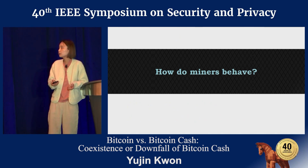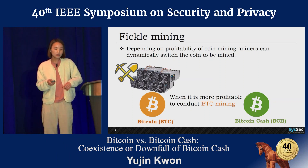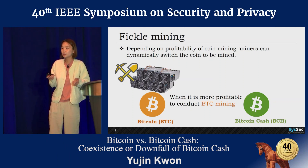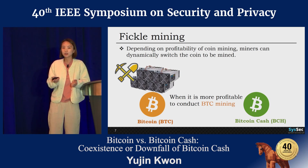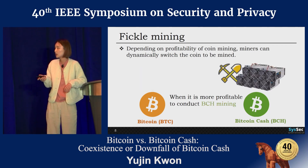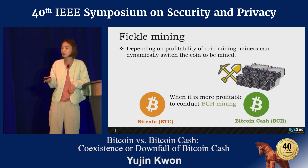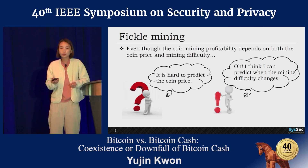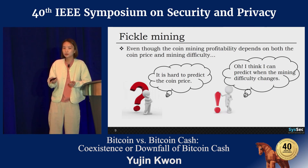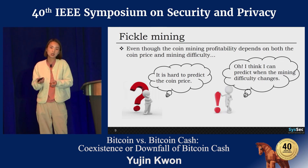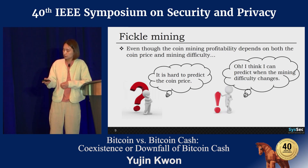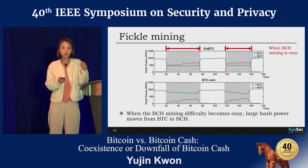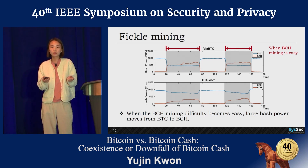In this situation, how do miners behave? Rational miners always pursue higher profit. Depending on the profitability of coin mining, miners can dynamically switch the coin to be mined. If it's more profitable to conduct BTC mining, they switch to BTC; otherwise, they switch to BCH mining. Even though coin mining profitability depends on both coin price and mining difficulty, predicting coin price is much more difficult than predicting mining difficulty. So we can observe sudden large hash power movement only when the coin mining difficulty changes.